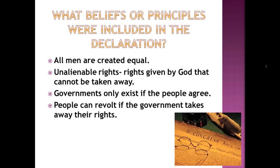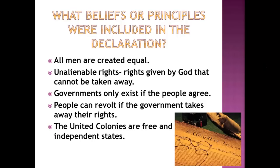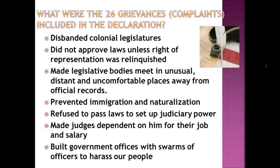Jefferson finished the Declaration by stating that the United Colonies are free and independent states, no longer under the rule of England or its king. The majority of the Declaration of Independence lists 26 grievances or complaints that the colonists leveled against the King of England, as well as a discussion of the many attempts the colonists had made to work with England and explain their concerns to the King.